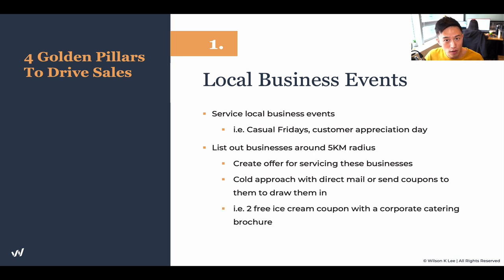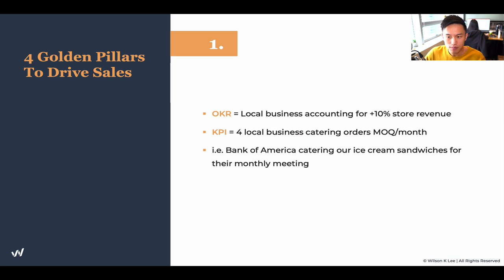For example, what we offered to local businesses was two free ice cream coupons with a corporate catering brochure. We approached the branch manager of a bank close to our ice cream shop, gave them two free ice cream coupons and our corporate catering brochure. When they saw the brochure, they got curious and started reading. Our goal is to increase this specific pillar to 10% of store revenue — local business should account for more than 10% of our store revenue. That's our objective, and this is our key result: local business accounting must hit 10% of store revenue.